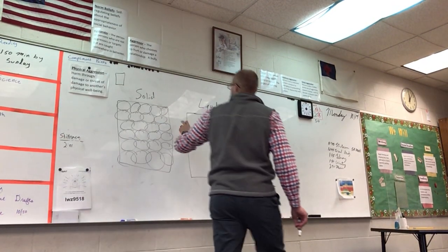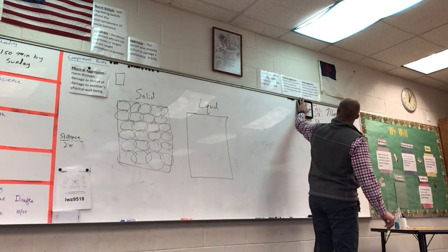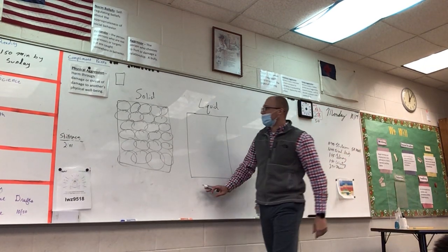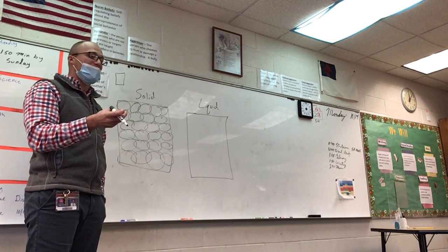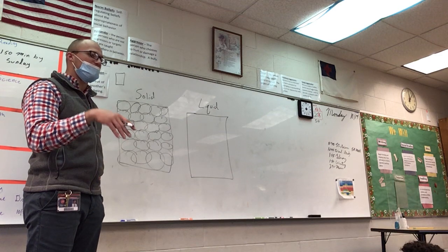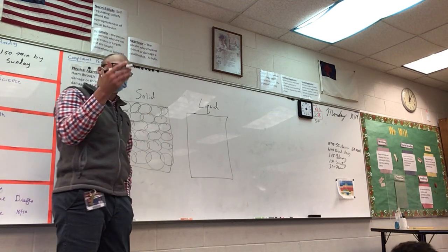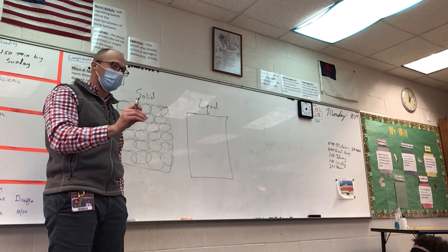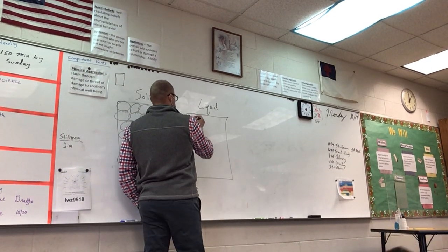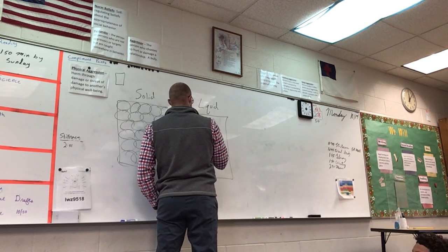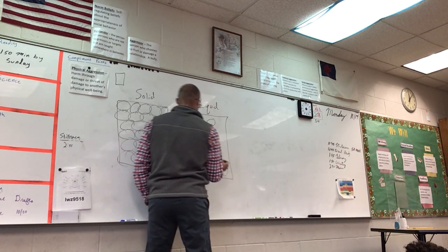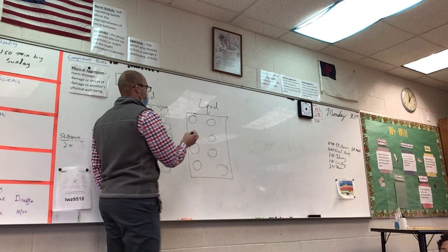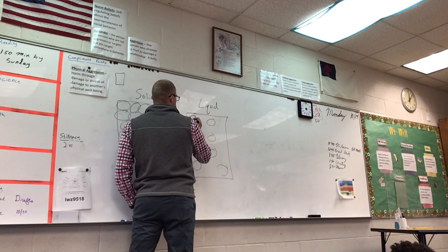We've drawn the solid portion and now we're going to move on to the liquid. Liquid particles don't have a definite shape, they move around. You mentioned you think the particles are a little bit spread out. So if we took a picture and zoomed really far in, our little liquid particles are just hanging out but they're a little more spread out, and they can move back and forth.